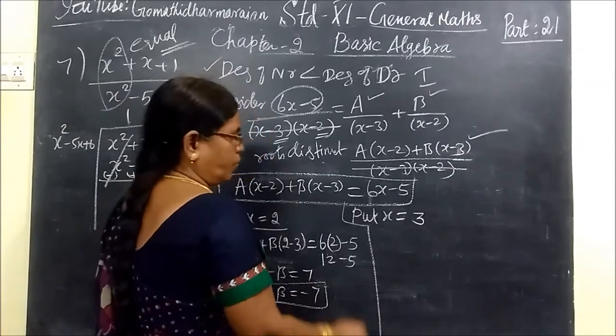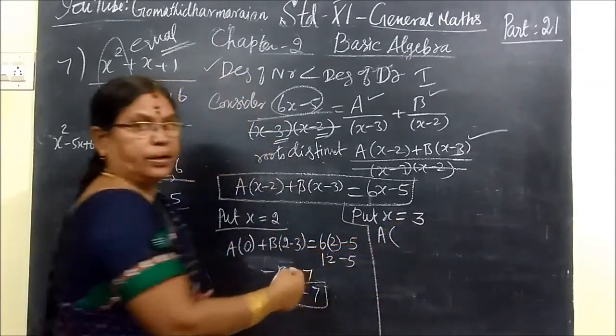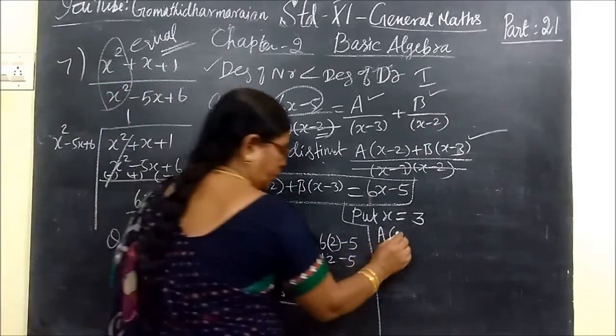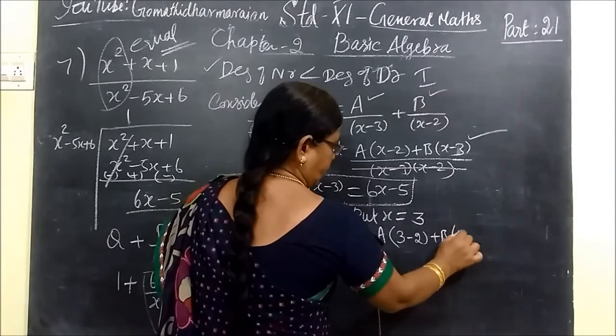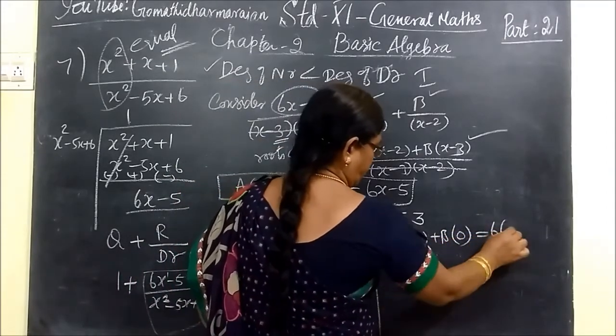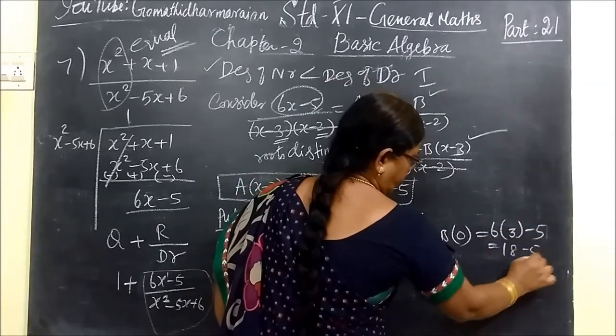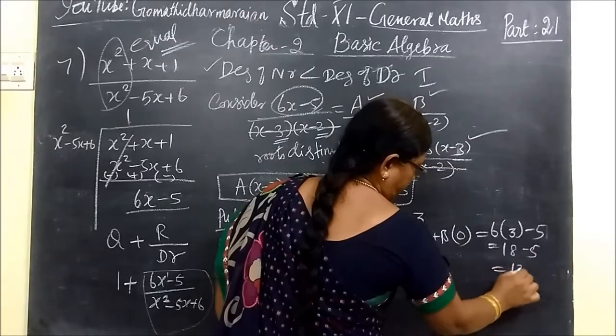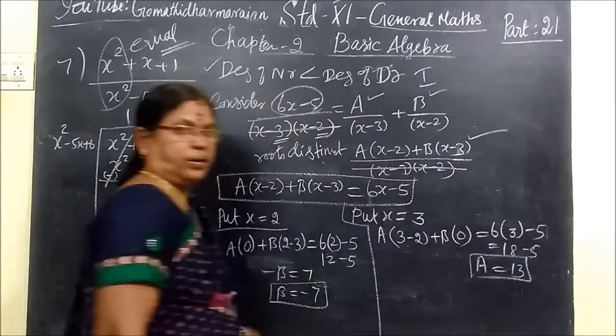Now we want to find A. A bracket, x equal to 3 substitute. So here you substitute 3, 3 minus 2. Then B bracket, this one will be 0. Then 6 times 3 minus 5, so 18 minus 5, so 13. That's A. So A value is 13.